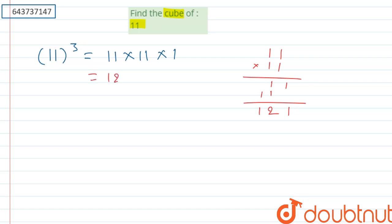So it will be 121 into 11. Now we need to multiply 121 with 11 again. So 121 one time will be 121, and 121 again 121. So it will be 1331.